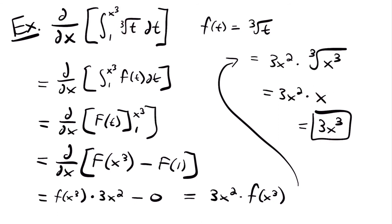You would just get x, which would be incorrect because you're not multiplying by the derivative of that bound, 3x squared. A quicker method would be to plug the upper bound x cubed into your function and then multiply by the bound's derivative — that would give you the same answer. But it's always better to show your work if you can.